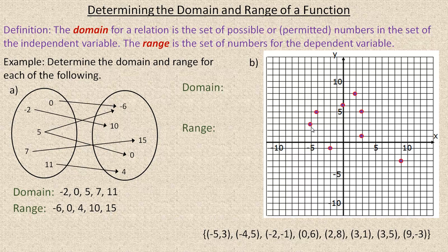The points are: (-5, 3), (-4, 5), (-2, -1), (0, 6), (2, 8), (3, 1), (3, 5), and (9, -3). Those last two points have the same x value. If you've studied functions vs. relations, this one actually isn't a function — it's just a relation, because we have two ordered pairs with the same x value. But we can still list the domain and range even if it's just a relation.